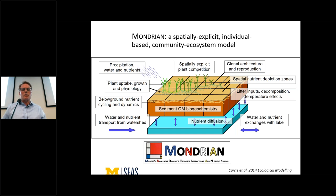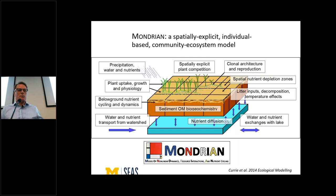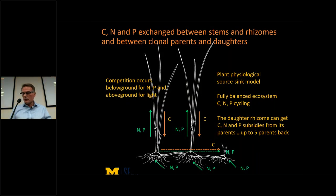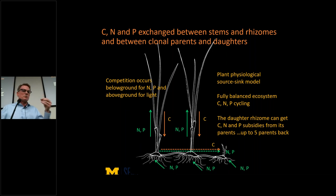Each grid cell — about 10 by 10 centimeters — has a complete ecosystem model operating within it. Water comes in carrying nutrients and goes out carrying nutrients. At the center of the model is individual plant physiology, because we try to build it by coding how individuals work and then going up the hierarchy from there, with emergence arising by putting many individuals in the same space.